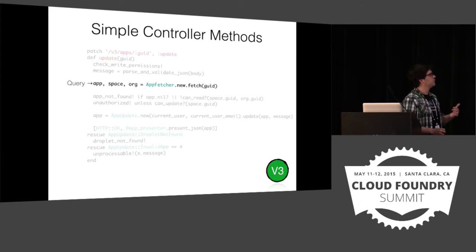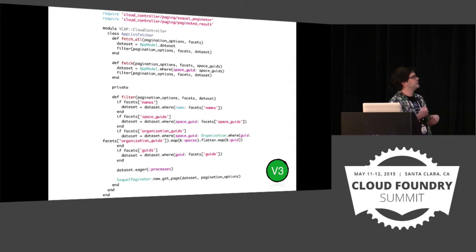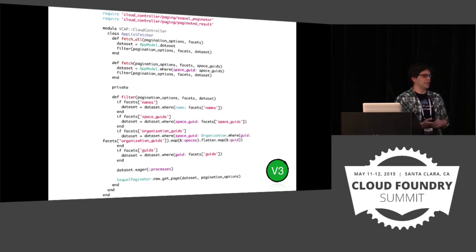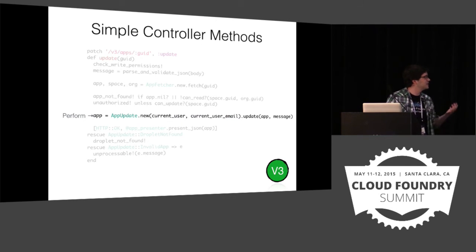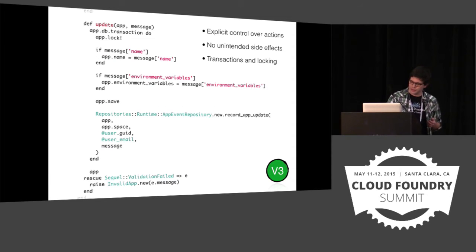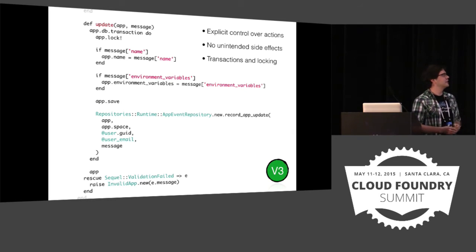Two new paradigms introduced in V3: the Fetcher is the first one — it's really just a query object. This particular object is quite large; it lists all the apps either in the space or in the system and has all the logic necessary to create that query. No other queries happen outside of this because we return just the objects themselves — so there are no surprise queries when running the system. The other first-class object is the action object. AppUpdate is the example: it's isolated, there is no shared code between this action and other actions in the system, everything that happens for this controller action happens here, and because of that it's easy to test with no unintended side effects.